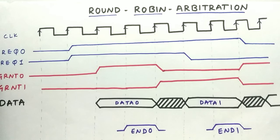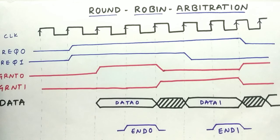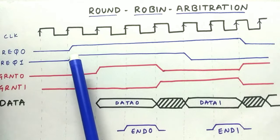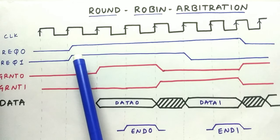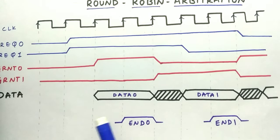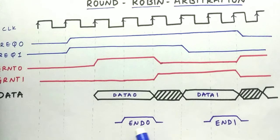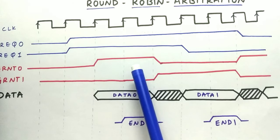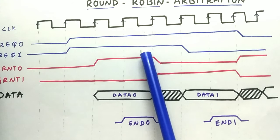Now let us understand round-robin arbitration through waveforms. Here I'm considering two agents: agent 0 and agent 1. Agent 0 will start, then we will give the turn to agent 1, then agent 0, then agent 1. As you can see, the request signals of both agents are high at this clock edge. When both are high, the first turn will go to agent 0. As a result, we will give the grant to agent 0 and it can access the resources and transfer data. When the data transfer is completed, it will indicate this by the end-of-transaction pulse. When this pulse is received, the process of agent 0 is done and now we grant the signal to agent 1.